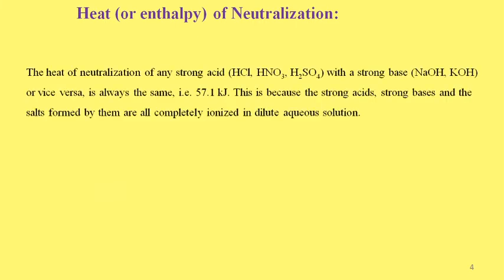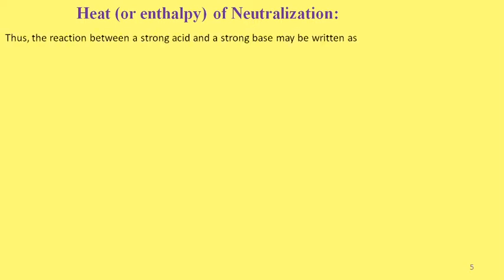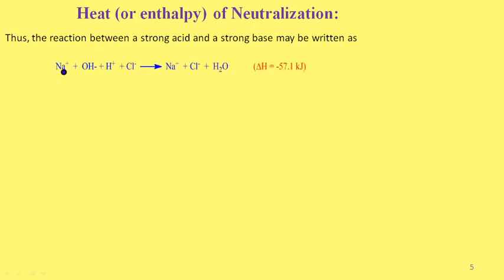The heat of neutralization of any strong acid with any strong base or vice versa is always the same, that is 57.1 kJ, because strong acids, strong bases, and the salts formed by them are all completely ionized in dilute aqueous solution. Thus the reaction between a strong acid and strong base may be written as: Na⁺ + OH⁻ + H⁺ + Cl⁻ → Na⁺ + Cl⁻ + H₂O, with ΔH = −57.1 kJ.